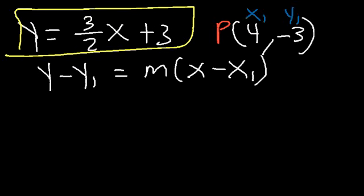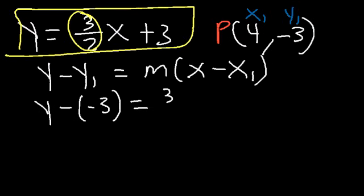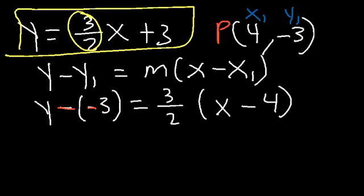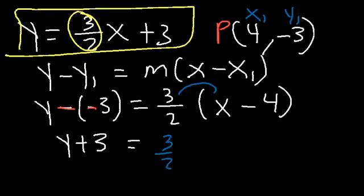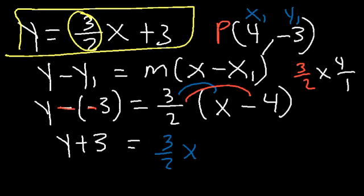So x1 is 4 and y1 is negative 3. The slope is still 3 over 2 — the number in front of x. Let's plug in: replace y1 with negative 3, substitute m with 3 over 2, and x1 is 4. Whenever you have two negative signs next to each other, they change to a positive sign, so we get y plus 3. Distributing 3 halves to x minus 4: 3 over 2 times x is 3 over 2 x, and 3 halves times 4 is 12 divided by 2, which is 6, so this becomes negative 6.